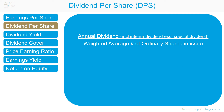Dividend Per Share, referred to as DPS, is annual dividends — total dividends paid out by an organisation in one year, including interim dividends but not including special dividends — divided by the weighted average number of ordinary shares. DPS is used by individuals evaluating various stocks to invest in who prefer organisations that pay out dividends. However, DPS does not necessarily provide a complete outlook, as some organisations retain earnings to invest in growth, which may lead to an increase in share value due to expansion.